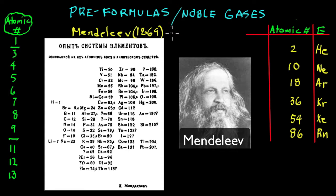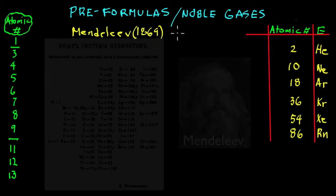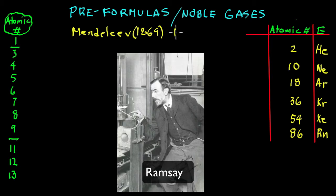Notice, no noble gases. It wasn't until about 30 years later that a scientist by the name of Ramsey, with some insight with some of his colleagues, discovered there was a whole group of elements not on the chart. These were then called the inert gases, inert because they didn't react with anything.